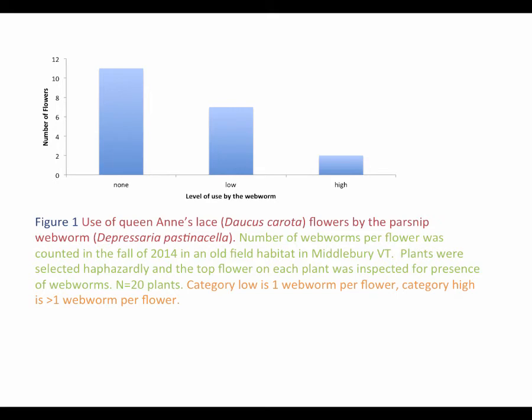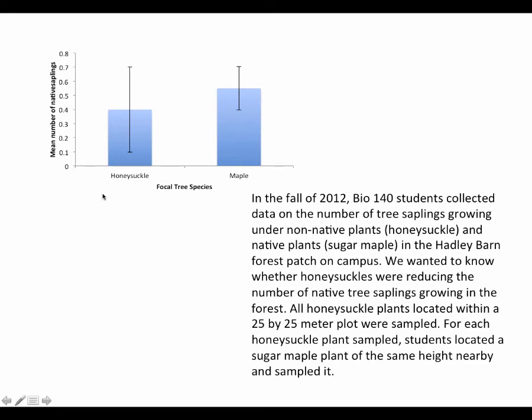Let's look at a slightly more complicated graph. Here's a graph that shows an average or mean, with error bars, and two different bars for two different species, with collection information provided. This might be a good point to hit the pause button and think about that table — what would you put for each section? The header is pretty straightforward, but what would you make as the title? What would you put as the methods? And what would you put as how to read the graph? Once you've spent some time thinking about that and making notes in your lab notebook, proceed to the next slide.